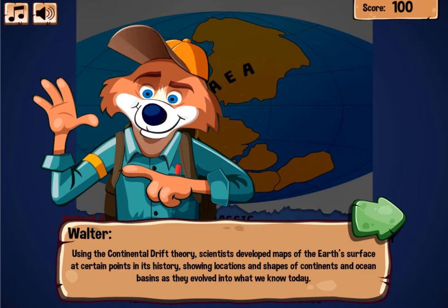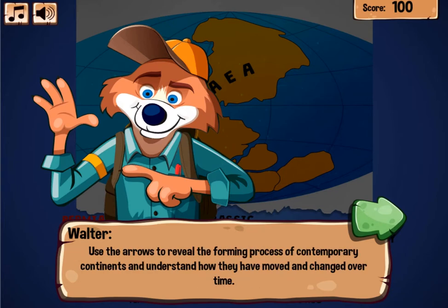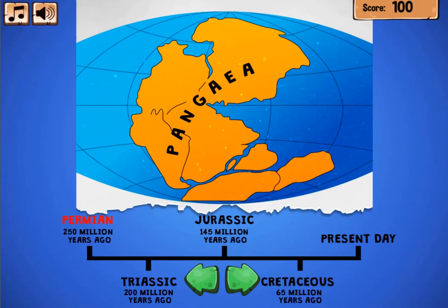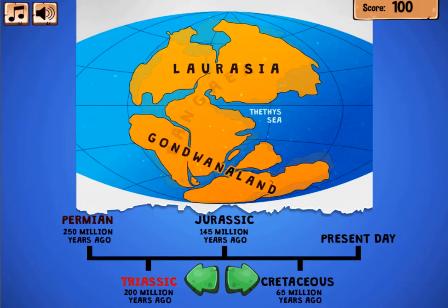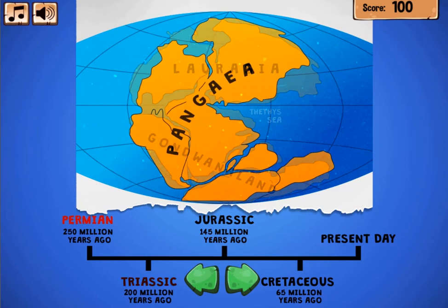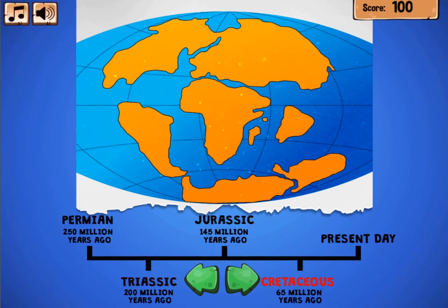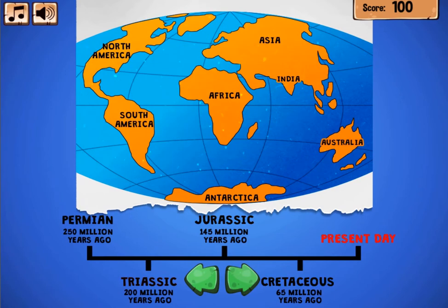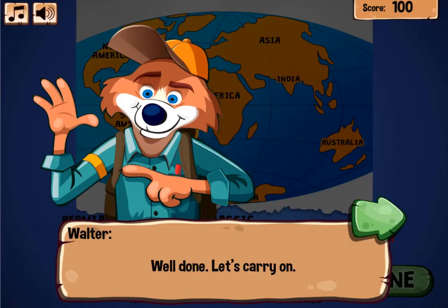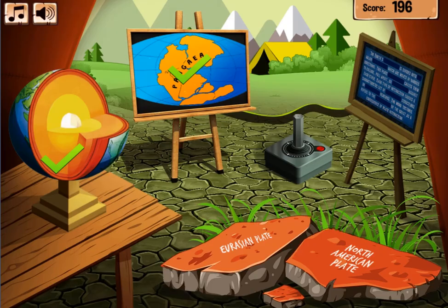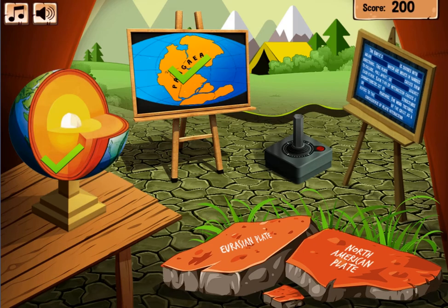You will need to click and place earth's layers in the correct positions. You will need to click with the arrows and observe how the earth's surface land map changed over time. You will also need to drag and drop the correct words to complete sentences about science.